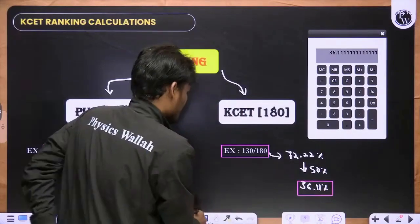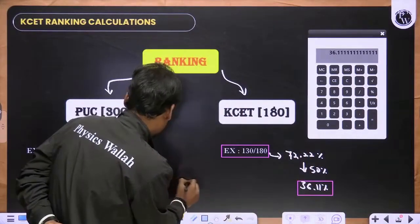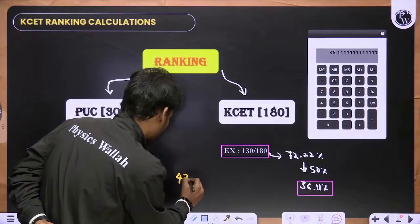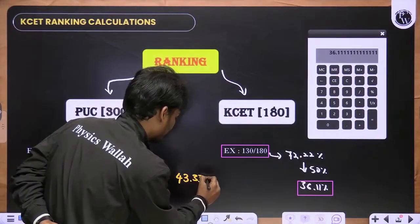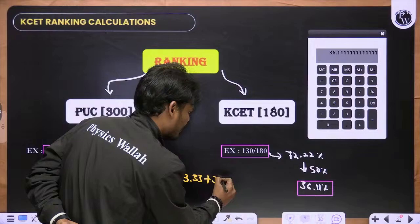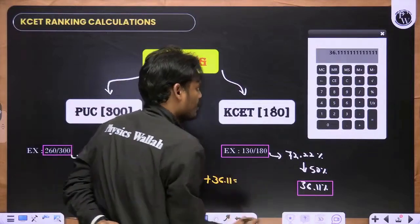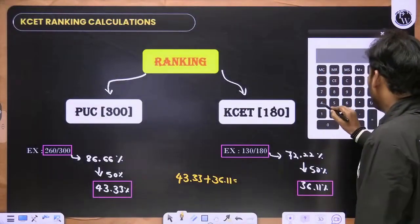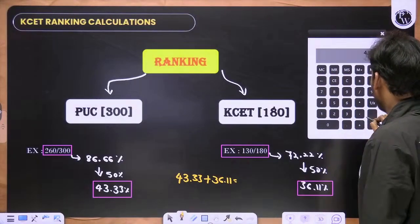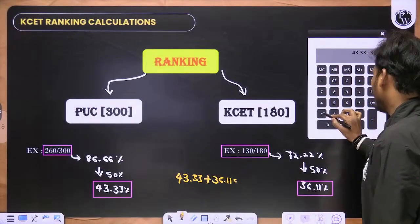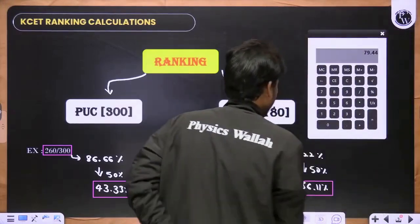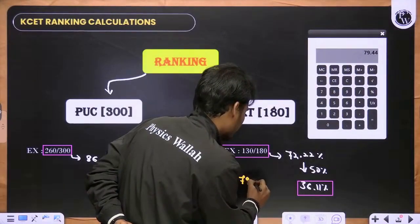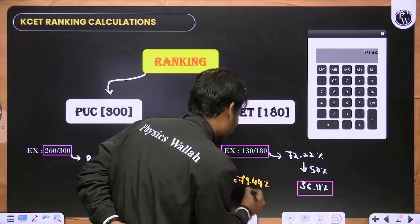Now you have to combine both. From board, 50 percent is 43.33. From KCET, 36.11. So 43.33 plus 36.11 equals 79.44. This is the percentage for KCET ranking calculation.